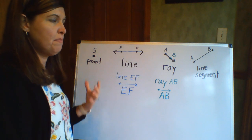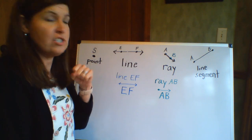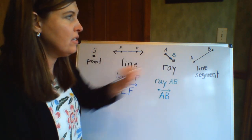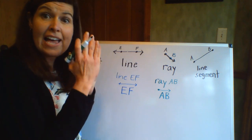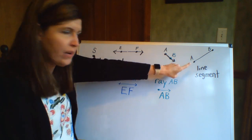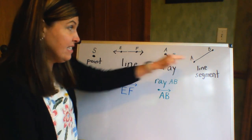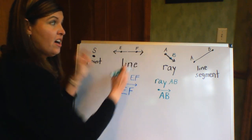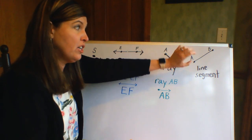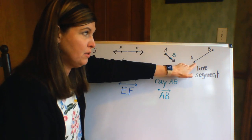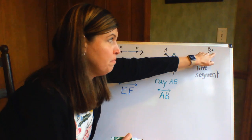And the last vocabulary that you need to know is a line segment. Now here's a line segment. This has endpoints to them, and our endpoints are A and B. It's not like a line that continues on and on. It's saying I just want you to look at this line segment between A and B.